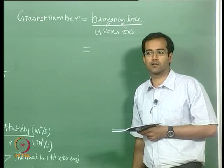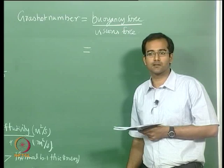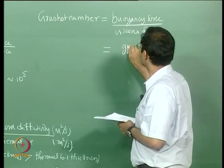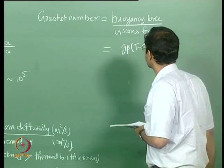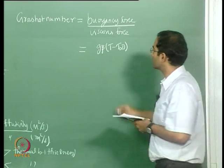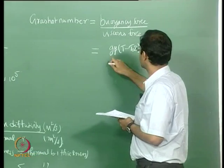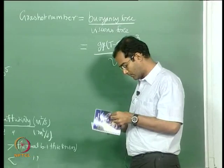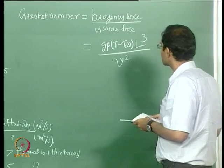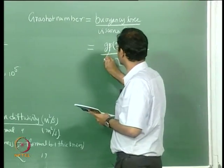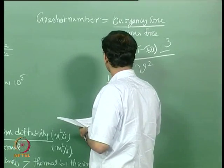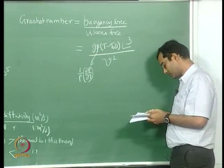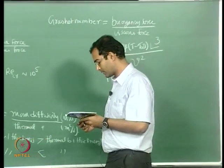Applying the Boussinesq approximation, the density difference is replaced by β (T − T_∞), giving the buoyancy force per unit volume as g β (T − T_∞). Converting to the Grashof number form by multiplying by L³ and dividing by ν², we get Gr = g β (T − T_∞) L³ / ν², where β = (1/ρ)(dρ/dT).